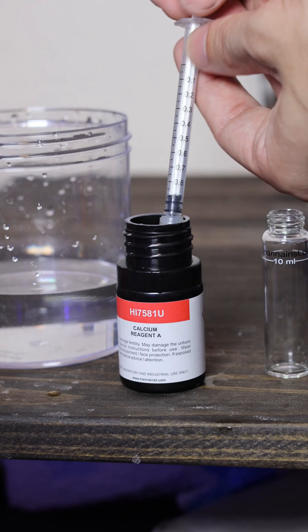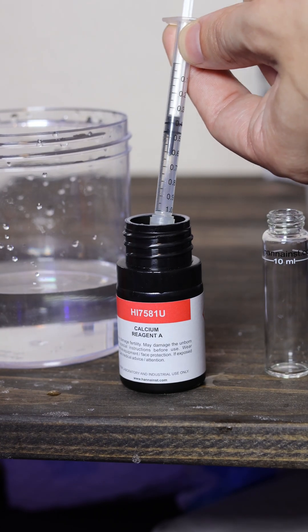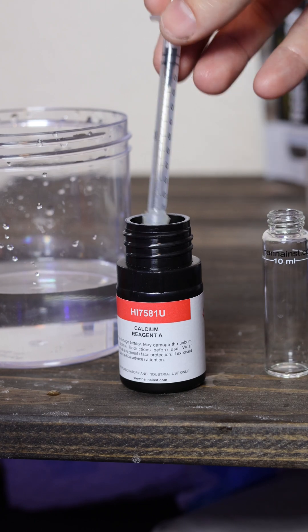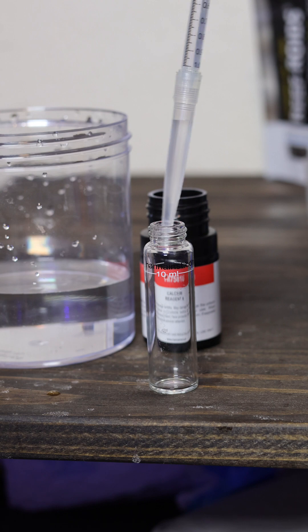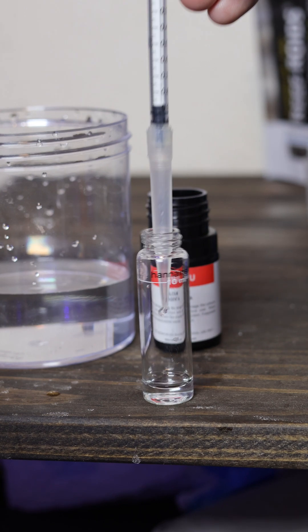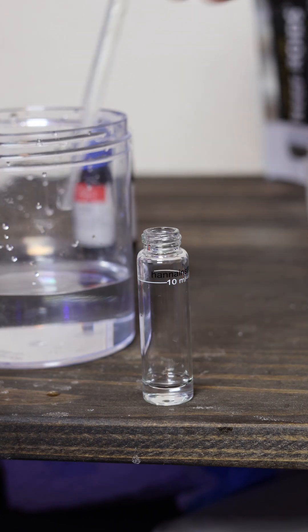We're going to start by taking one milliliter of reagent A. Use the nozzle that comes with the test kit and pull the plunger up to where it says one milliliter. You're going to notice that there's no reagent inside of the syringe. That's perfectly fine. Put that reagent A into the test tube and then we're going to use the RODI water to fill up the test tube the rest of the way to the 10 milliliter mark.